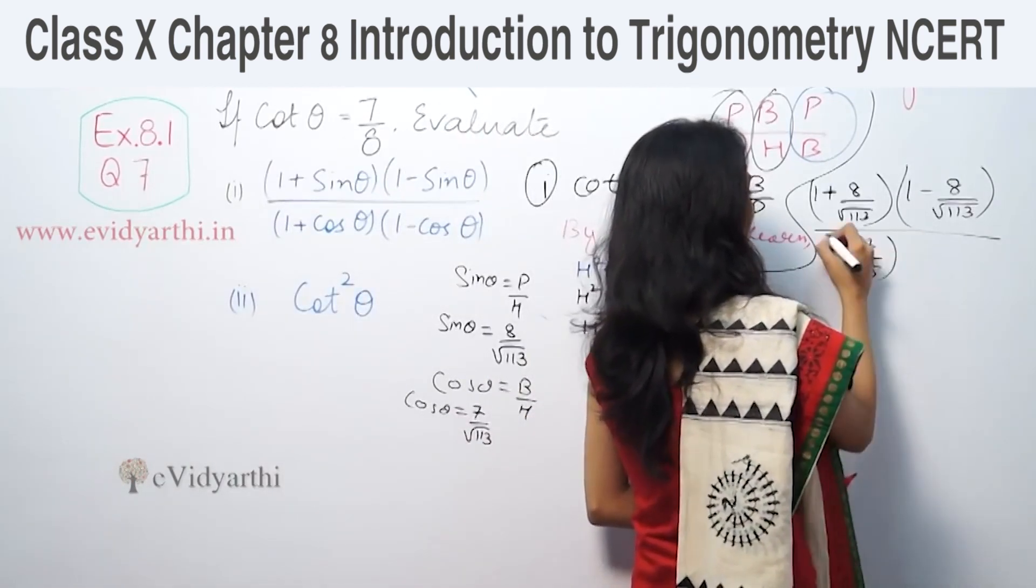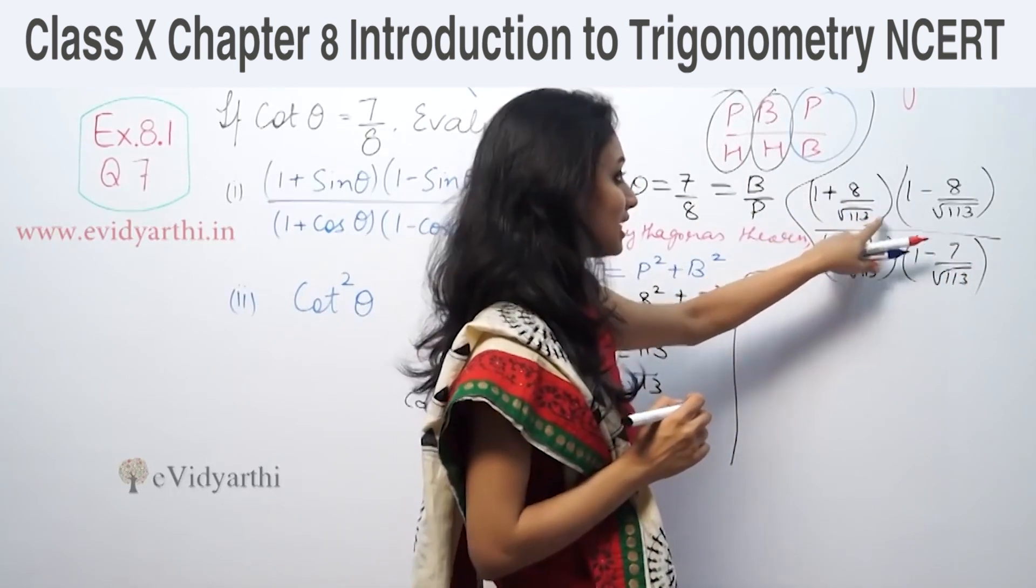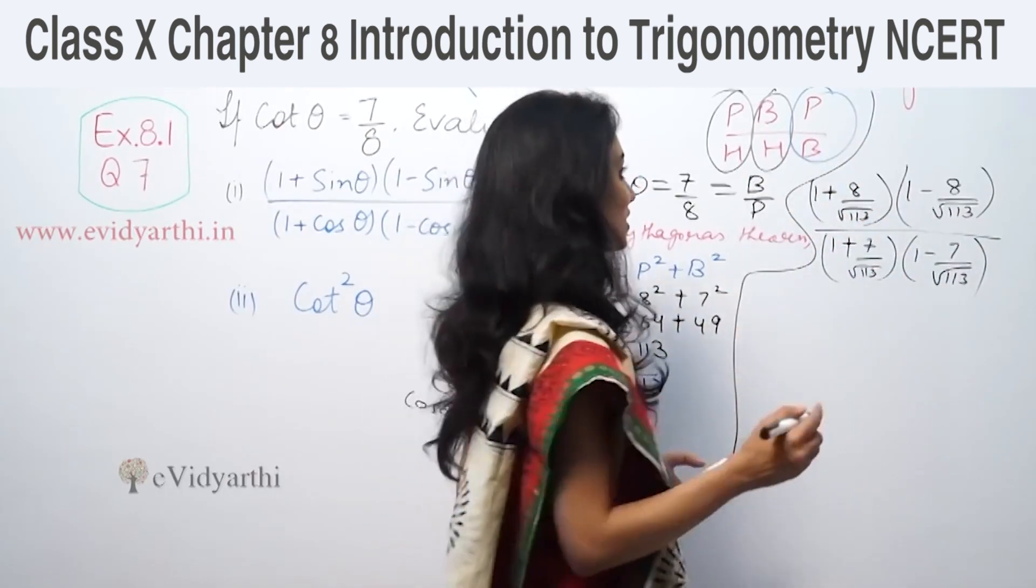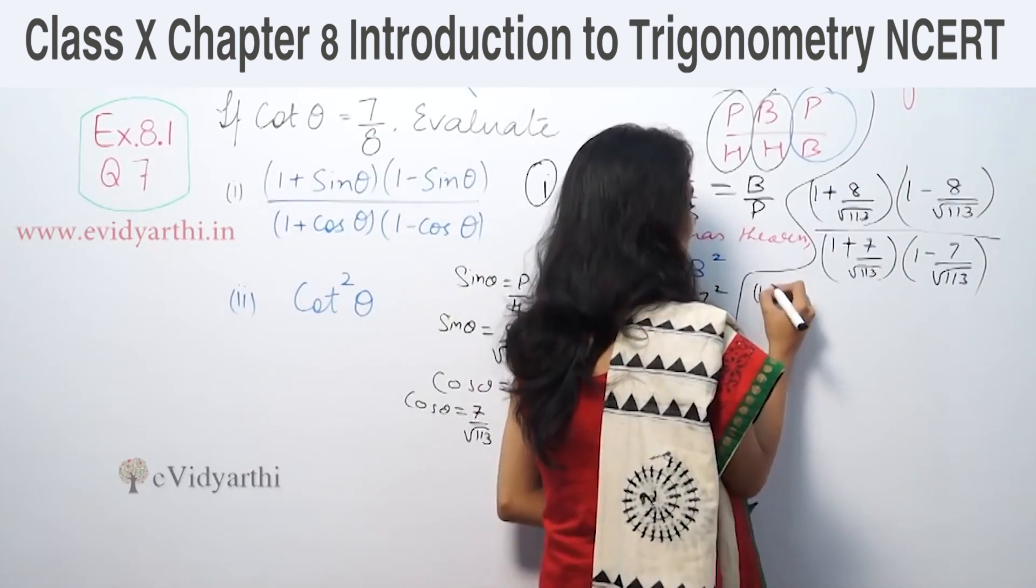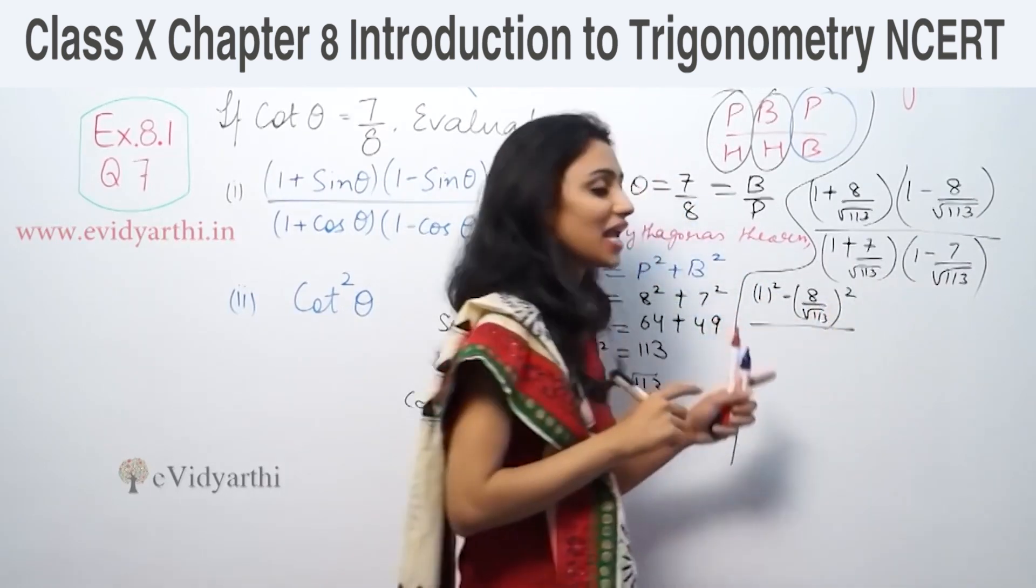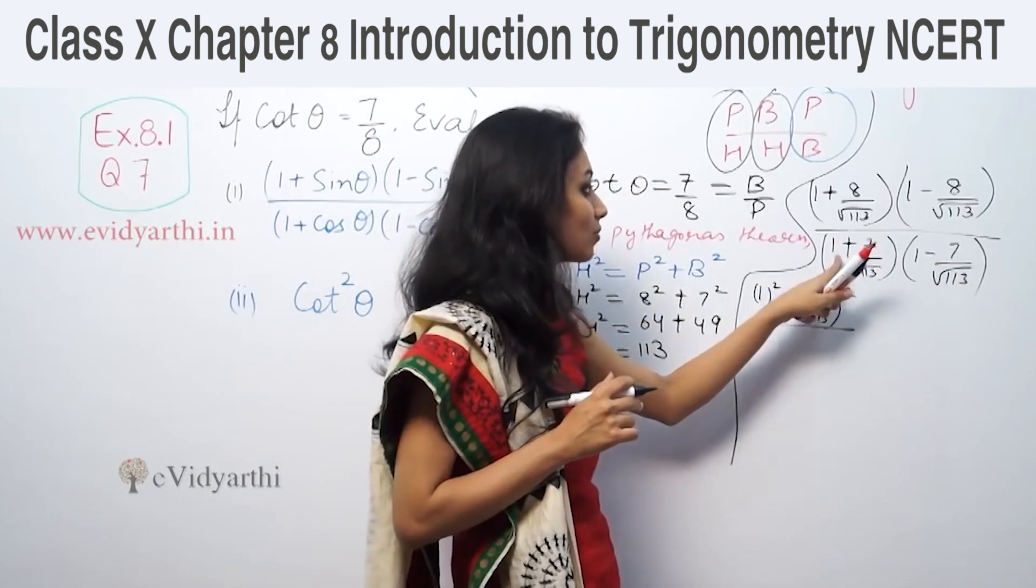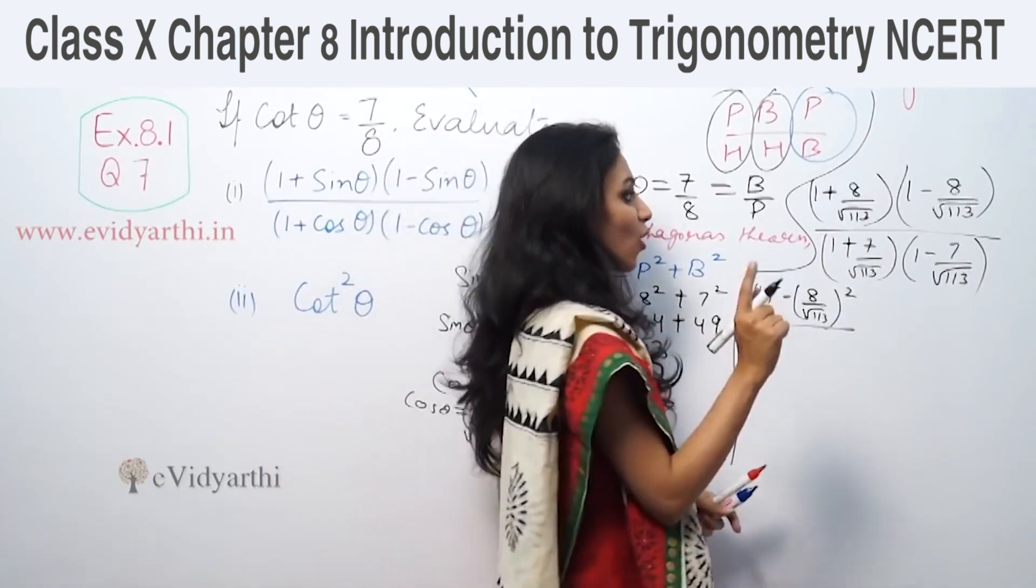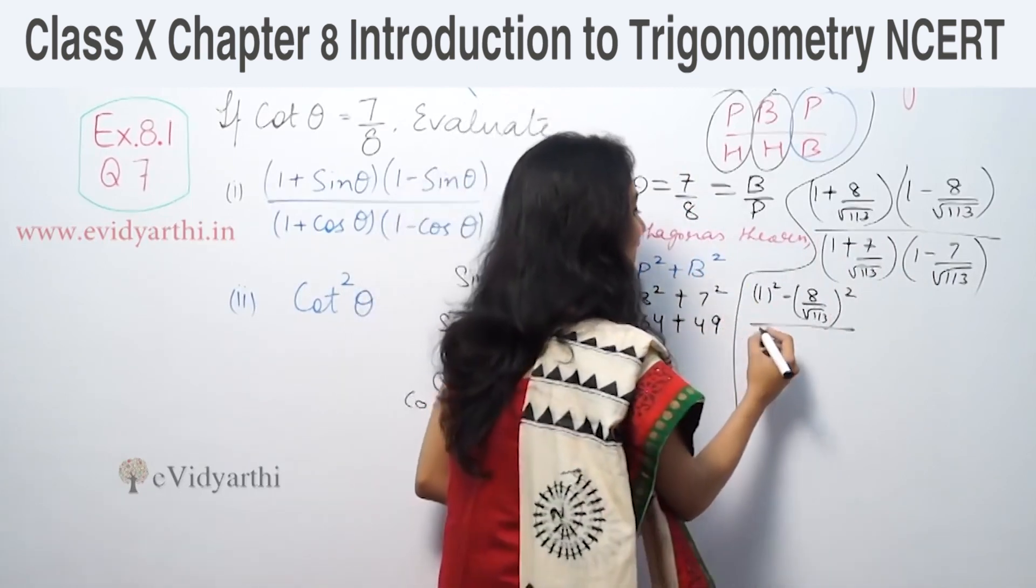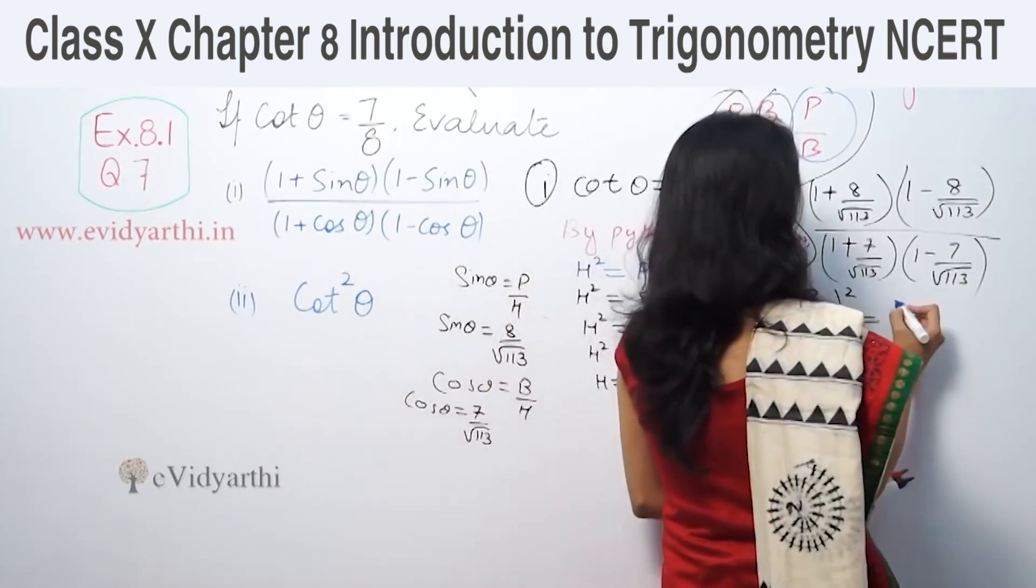This formula becomes (a plus b)(a minus b). In both numerator and denominator, a is same, b is same, one has plus, one has minus. So (a plus b)(a minus b) equals a² minus b². Same formula applies to the denominator.